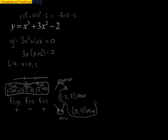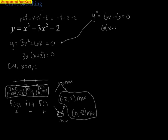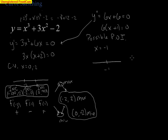Now we use the second derivative to determine concavity. The second derivative is 6x plus 6, found by differentiating the first derivative. Setting it equal to 0 and factoring out 6 gives x plus 1 equals 0, so x equals negative 1. Unlike the first derivative, this gives us a possible point of inflection. Placing negative 1 on a number line gives two intervals.